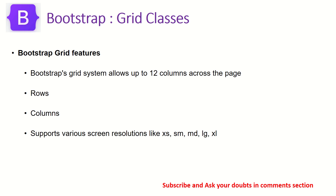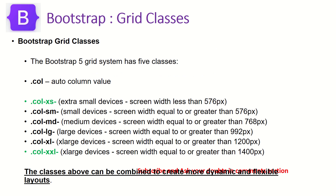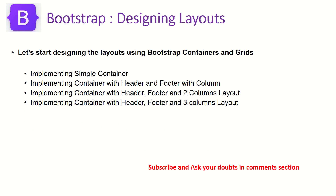Bootstrap 5 grid also allows us to design for various screen resolutions, which we covered in the last episode. It supports extra small, small, medium, large, XL, and XXL. Extra small and small are for mobile devices, medium could be for iPad, large for desktops, and so on. Today's episode focuses on designing layouts using Bootstrap grids and containers — implementing a simple container with header, footer, two-column, and three-column layouts.